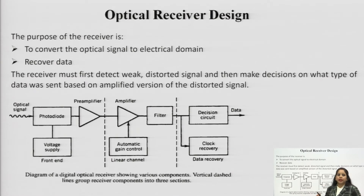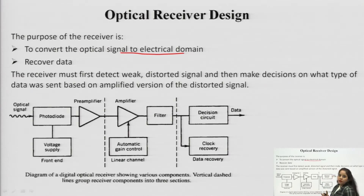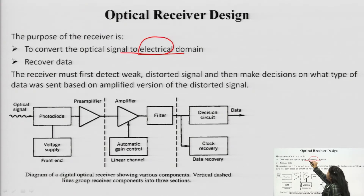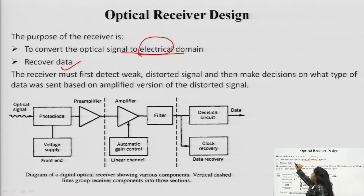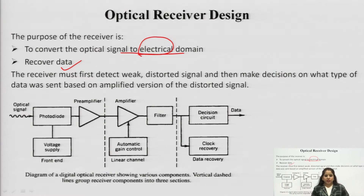In optical receiver design, the purpose of the receiver is to convert the optical signal into the electrical domain. The first function performed by the receiver is to convert the optical signal coming from the optical fiber into the electrical signal, because further analysis of the signal is in the electrical domain only. The second purpose is to recover data sent by the sender, since the signal undergoes various types of attenuation and may be in coded form.